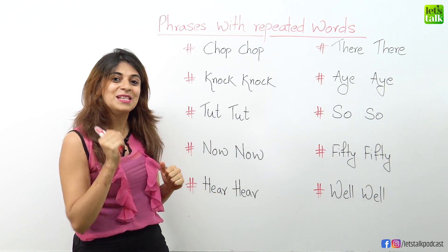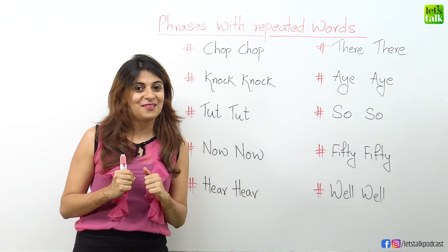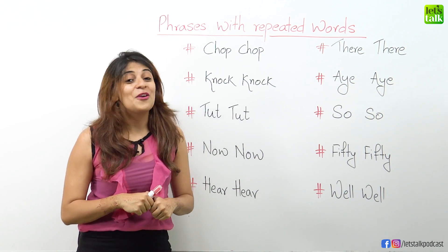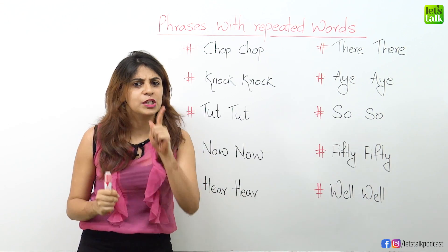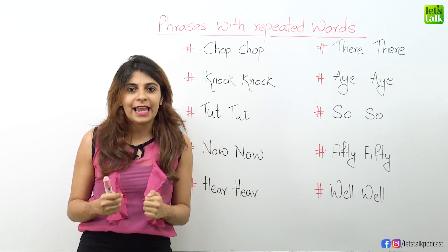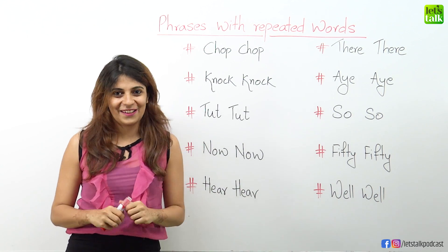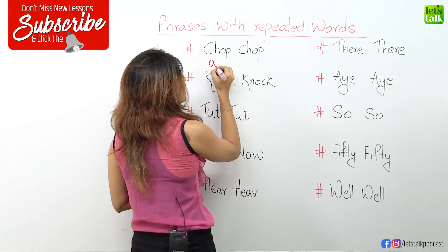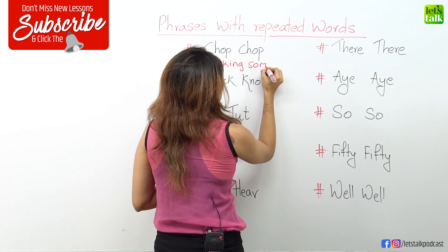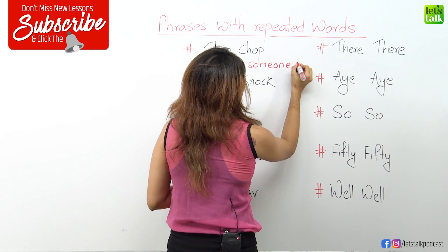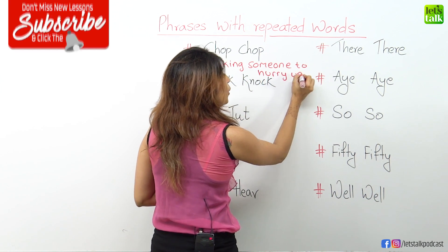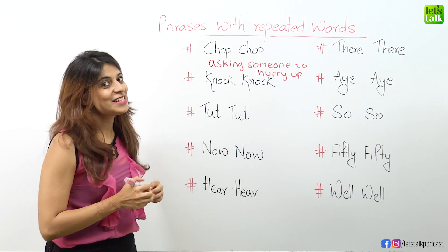Husbands especially can use it for their wives because women take a lot of time to dress up. So if you want them to hurry up because you are getting late, then use this phrase — chop chop, we are getting late, we will miss the movie. So when you are asking someone to hurry up, you use the phrase 'chop chop'.